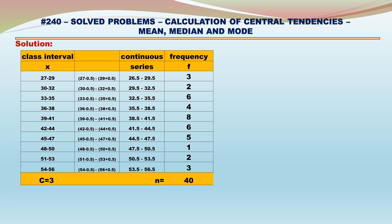Class interval equals 3. The corresponding frequencies are: 3, 2, 6, 4, 8, 6, 5, 1, 2, 3 respectively, with the total number being 40.